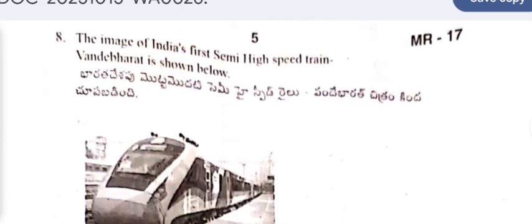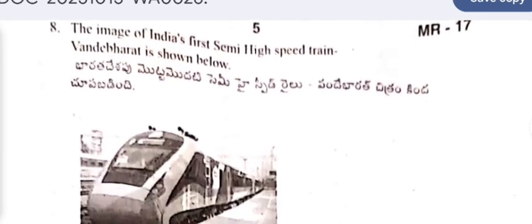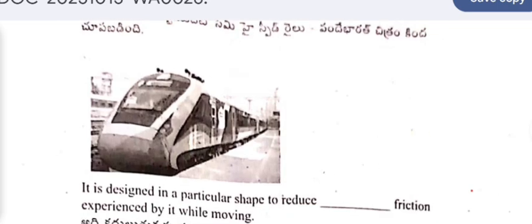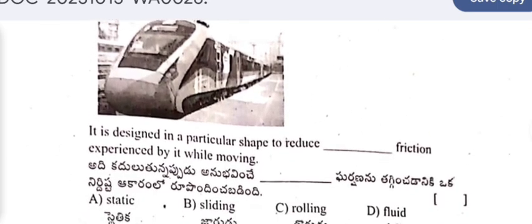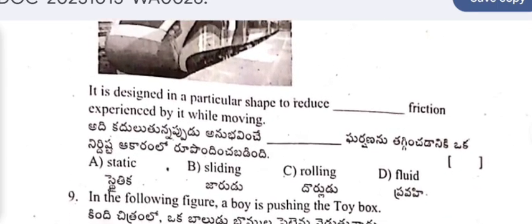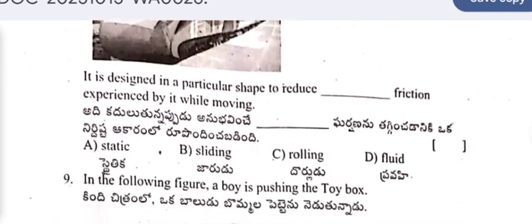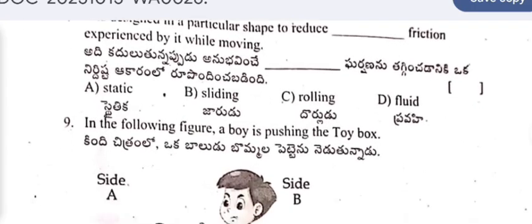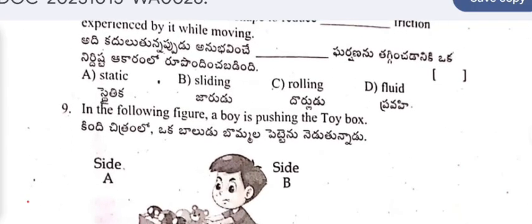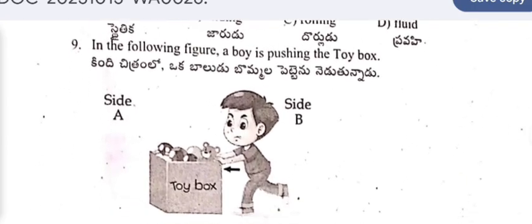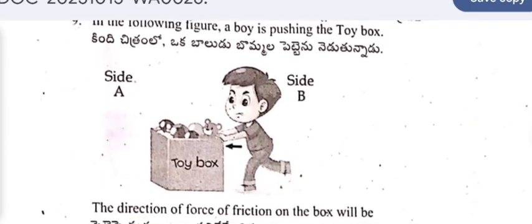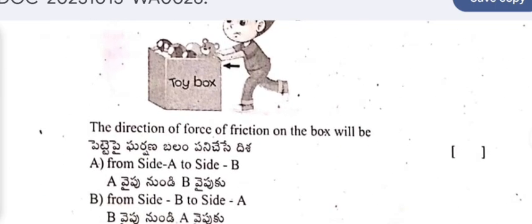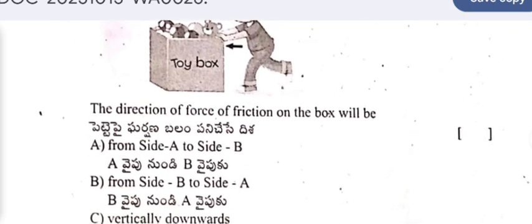Question 7: The image of India's first semi-high-speed train is shown below. It is designed in a particular shape to reduce the dash friction experienced by it while moving. Question 8: In the following figure, a boy is pushing a toy box. The direction of the force of friction on the box will be?